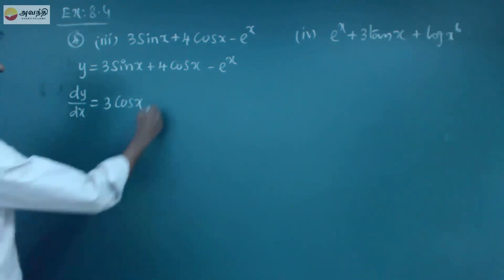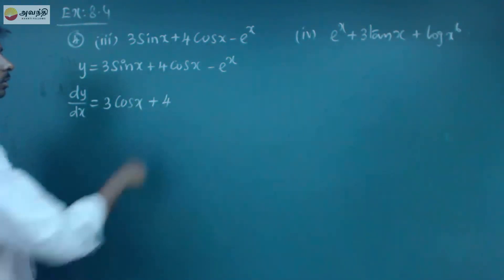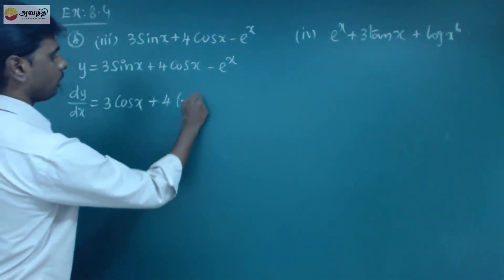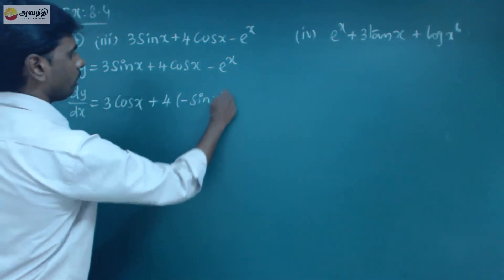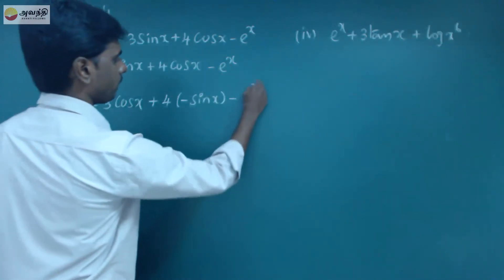Okay valla, plus 4 constant, cos x kodha multiple hundhukha 4, so cos x differentiation panna minus sin x, minus e power x. e power x differentiation panna e power x, okay?